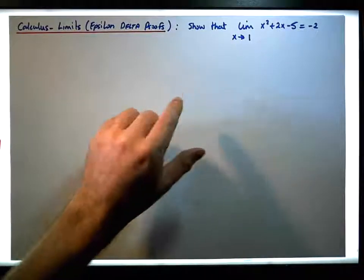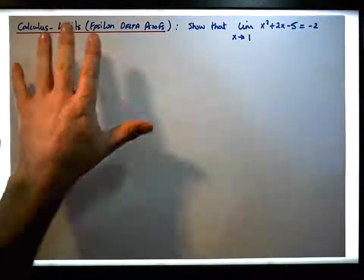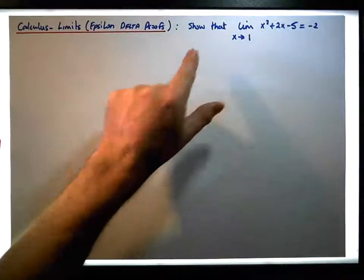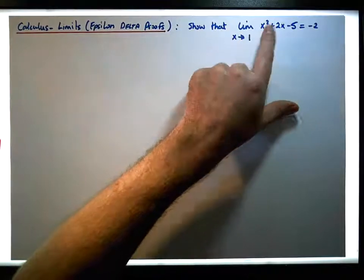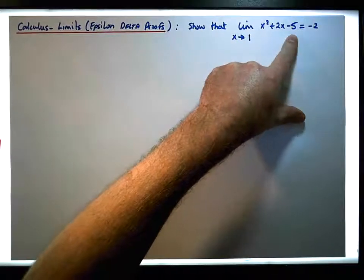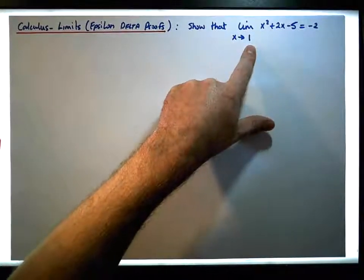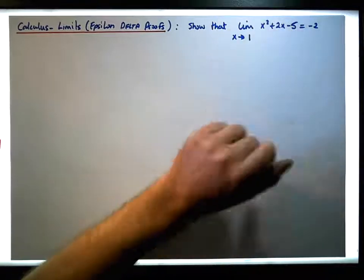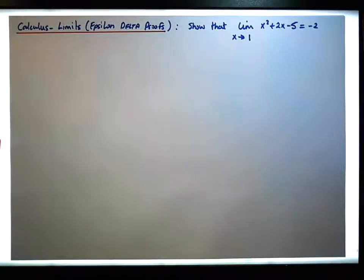What we'd like to do is use the epsilon-delta definition of a limit to show that the limit of the function x squared plus 2x minus 5, as x tends to 1, is in fact minus 2.